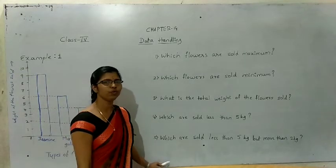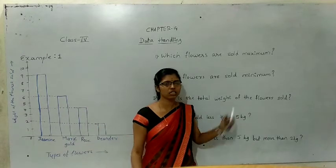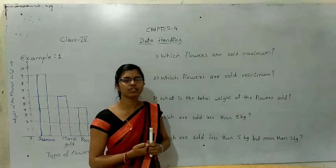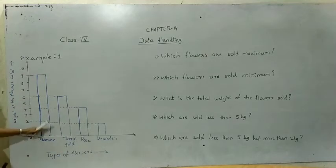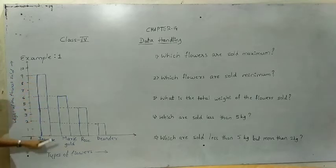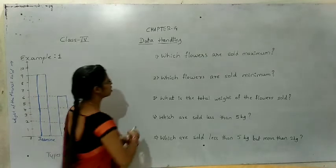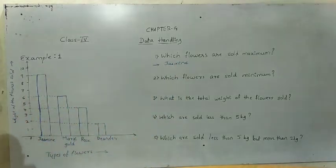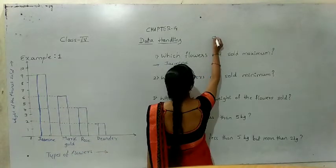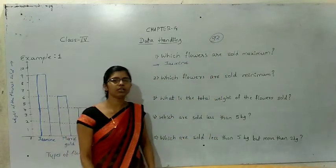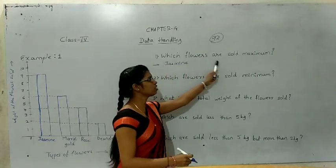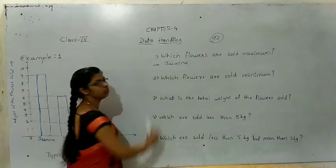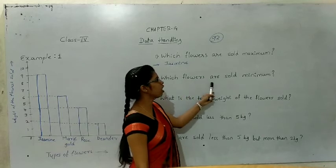Now they have given some questions. By observing this graph, answer the questions one by one. Question one: which flower is sold maximum? The maximum number is 9, so that means jasmine. The first answer is jasmine.